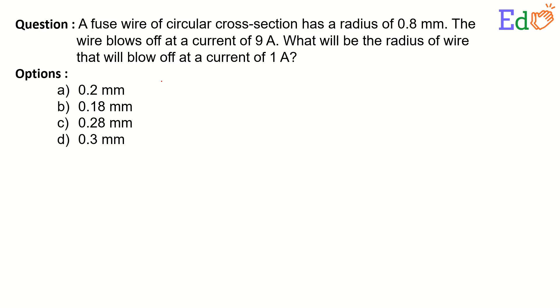The question states: a fused wire of circular cross-section has a radius of 0.8 mm. The wire blows off at a current of 9 Ampere. What will be the radius of wire that will blow off at a current of 1 Ampere?